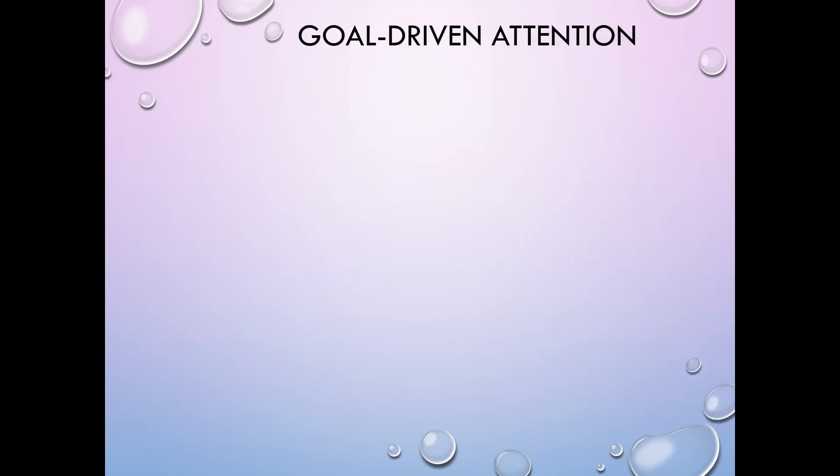We've gotten through the filter models, which really heavily emphasize the characteristics of the stimulus as determining what you're going to pay attention to. But more modern cognitive psychologists want to talk about goal-driven attention, where you're paying attention because of something inside of yourself — an interest or motivation causing your attention to be applied. It's a type of top-down processing, where things already inside your head — things you already know, believe, your motivations — drive your attention.